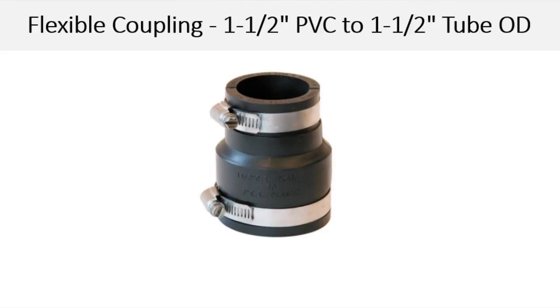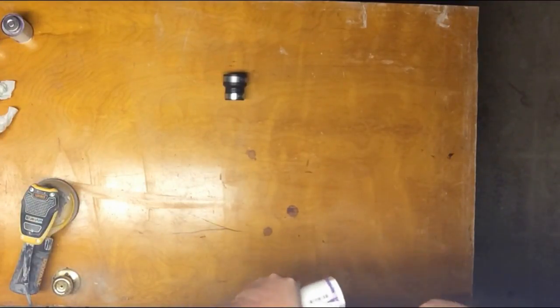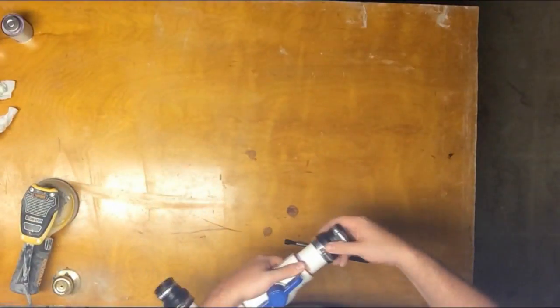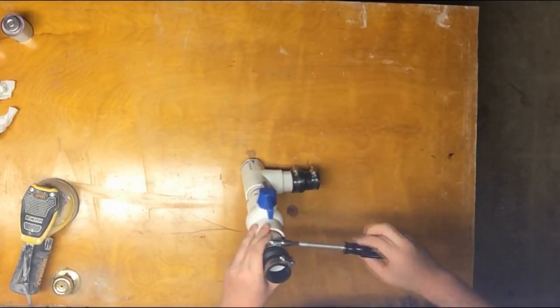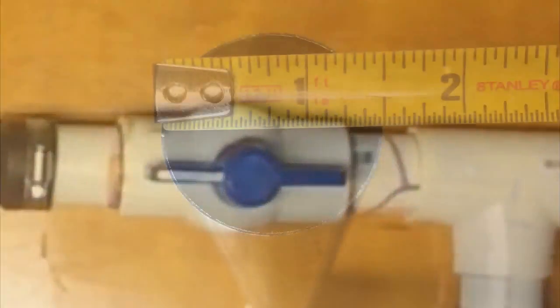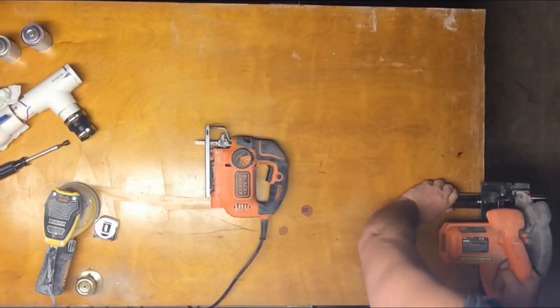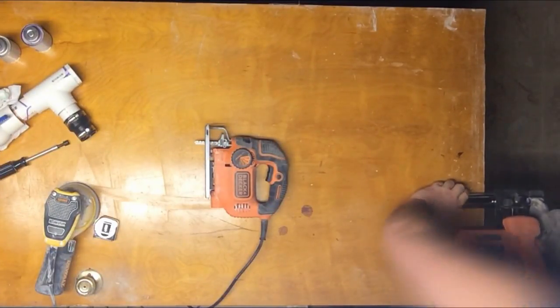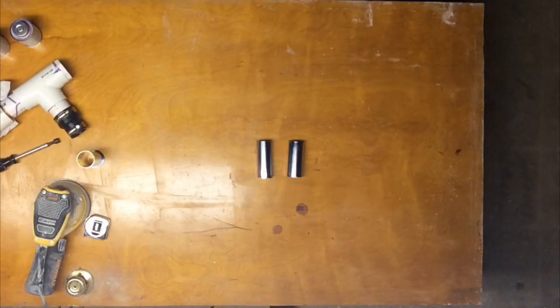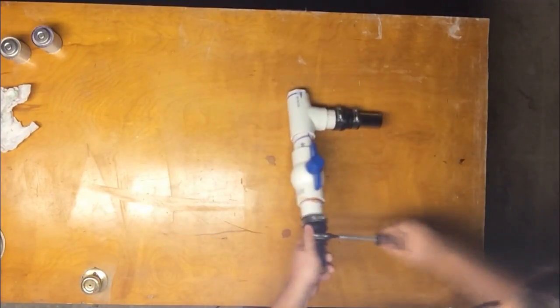Next I purchased flexible reducing couplings to go from one and a half inch PVC to one and a half inch tube. This is specific to how my pool is set up. You might need to do something a little bit different but I just tightened these onto the lengths of PVC pipe that I had. I then found a sink pipe with a one and a half inch outer diameter. I cut this into two three and a half inch lengths and then I tightened those into the other end of my flexible reducing coupling.